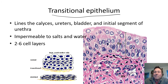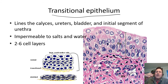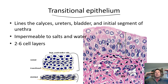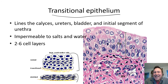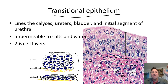Transitional means it can transition — it can change. When your bladder is empty, it looks like it has many layers and is thick. When your bladder is expanded and stretched out, the cells slide by each other a little bit and it becomes much thinner. Then you empty your bladder and it's balled up again. This epithelium changes every time you fill and empty your bladder — and it's a good barrier so that urine doesn't leak back into the body.